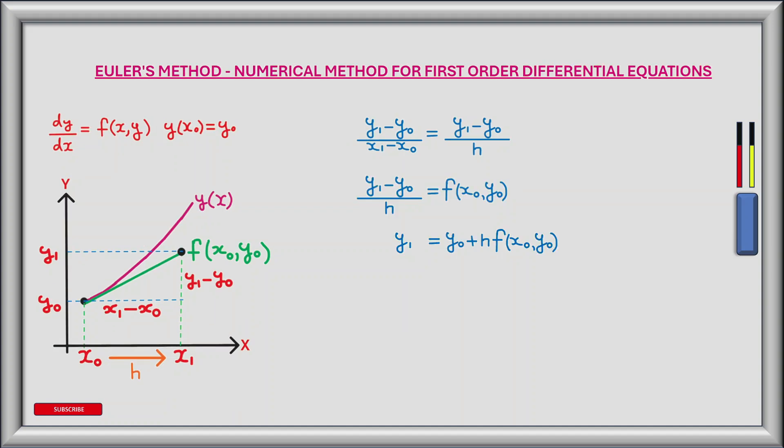This now gives us the gradient of our tangent. The gradient is also given by the derivative f(x,y) at our initial condition (x₀, y₀). So we can now equate the two and solve for y₁. So y₁ equals y₀ plus h, the step value, multiplied by f(x₀, y₀).